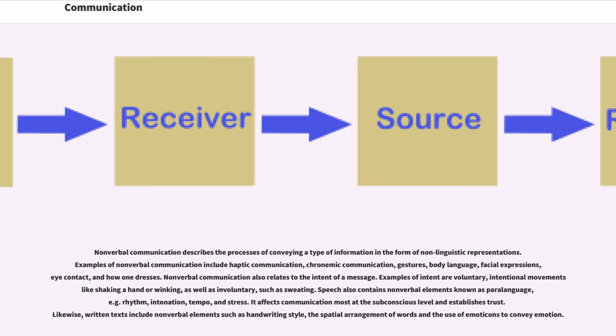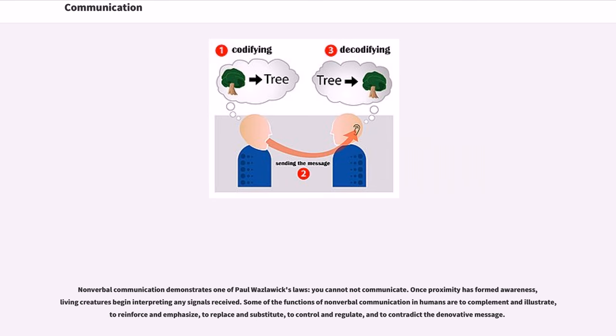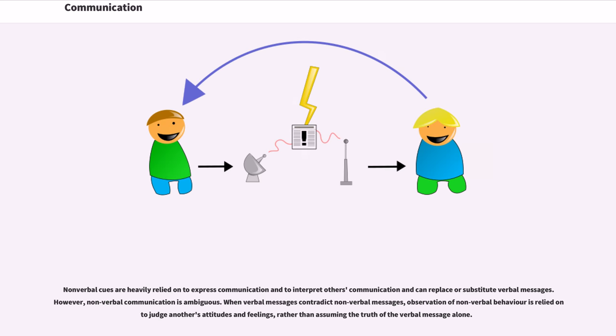Non-verbal communication demonstrates one of Paul Watzlawick's axioms: you cannot not communicate. Once proximity has formed awareness, living creatures begin interpreting any signals received. Some of the functions of non-verbal communication in humans are to complement and illustrate, to reinforce and emphasize, to replace and substitute, to control and regulate, and to contradict the denotative message. Non-verbal cues are heavily relied on to express communication and to interpret others' communication, and can replace or substitute verbal messages.